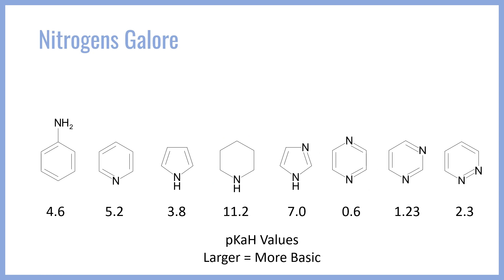Why is piperidine the most basic molecule? All of the other nitrogens are somehow adjacent to or part of a double-bonded system, but this one is not. This nitrogen is sp3 hybridized, which means its lone pair is in an sp3 orbital with no interactions with double bonds, pi orbitals, or sp2 orbitals. As a result, this lone pair is more loosely held by the nitrogen and more available for protons to latch onto, making it the most basic.